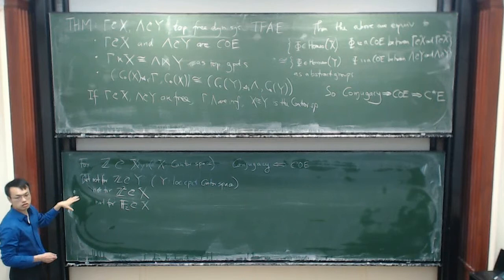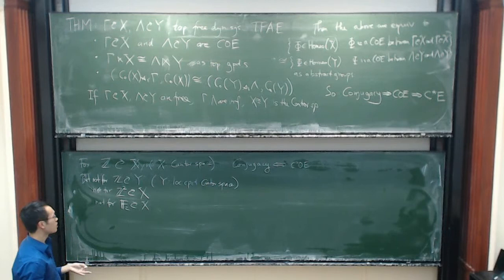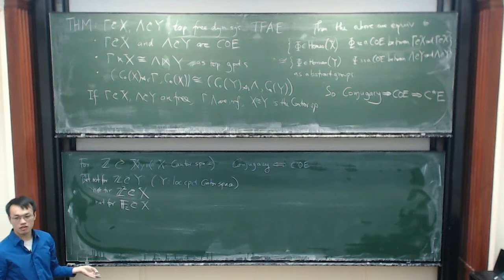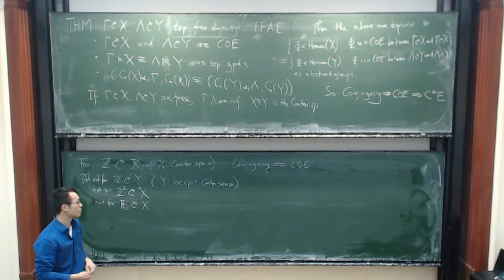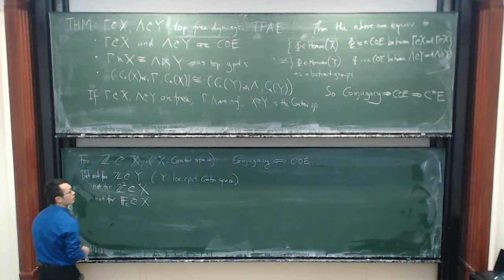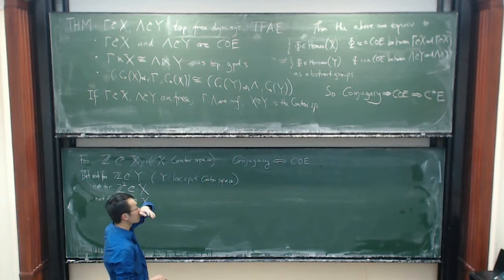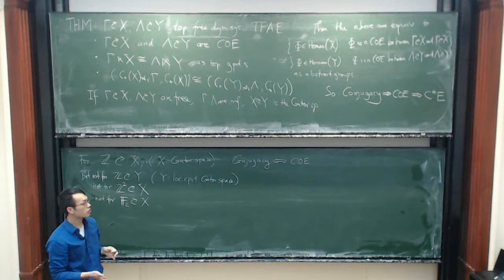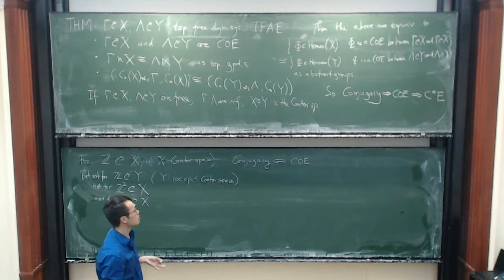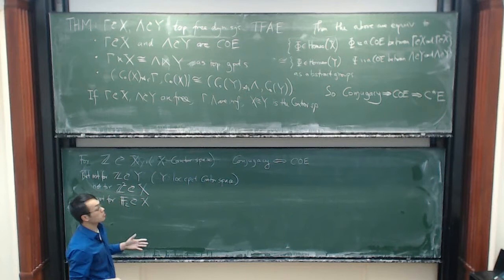Well, in some senses that is good news, because if continuous orbit equivalence were exactly the same as conjugacy in all cases, then after one surprising big result there would be nothing more to do. So now there is something to do here for the future. Regarding the other direction — going from C*-equivalence to continuous orbit equivalence — the question is really about uniqueness of the Cartan subalgebra, possibly uniqueness up to automorphism or inner automorphism. That is very much like the von Neumann case, and as far as I know not much work has been done on this question.